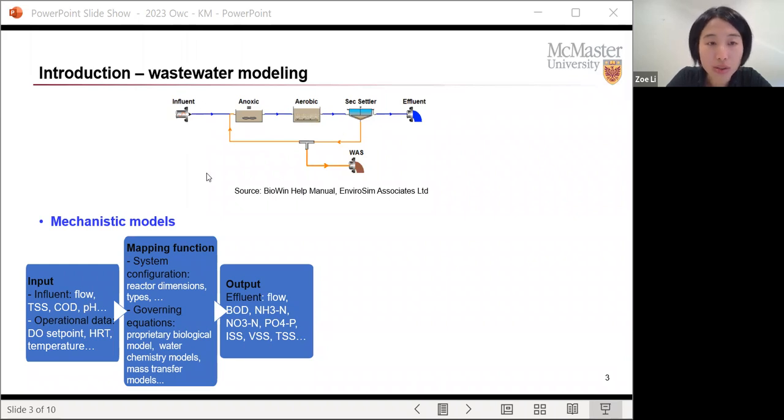So traditionally we would use mechanistic models. This is where we collect the data for the influent and for all the operational data for each individual unit. And then based on the governing equations such as biological, physical, chemical models, we can build a physically based model to estimate the effluent concentration. So that's mechanistic, the traditional mechanistic model.